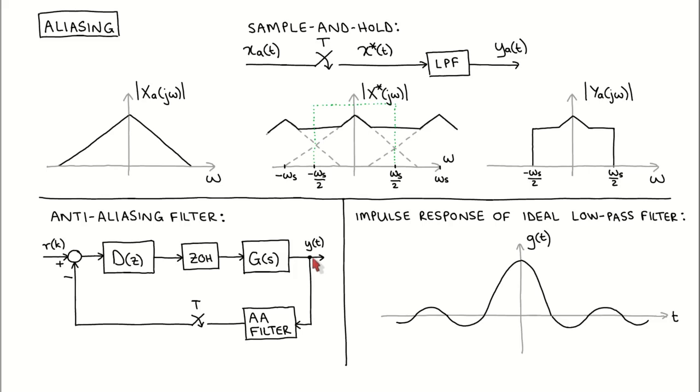To avoid this, we place a low-pass filter on the output of the sensor to remove the frequency components higher than the Nyquist frequency before the signal is sampled. This filter is called an anti-aliasing filter.